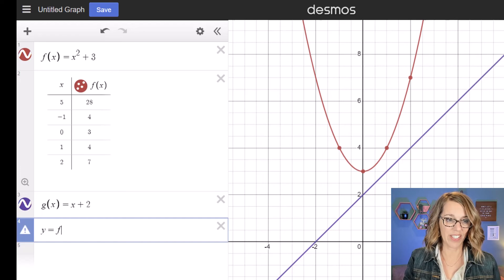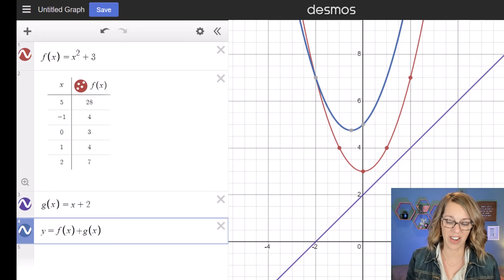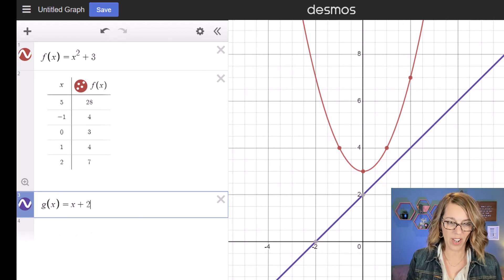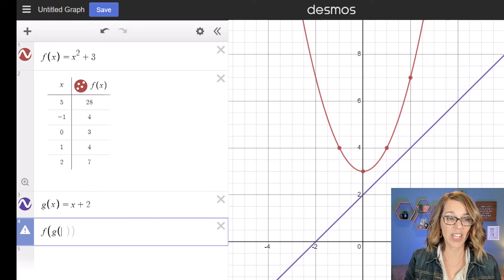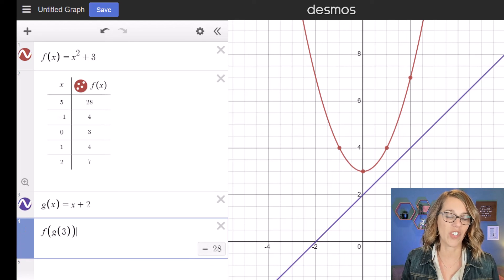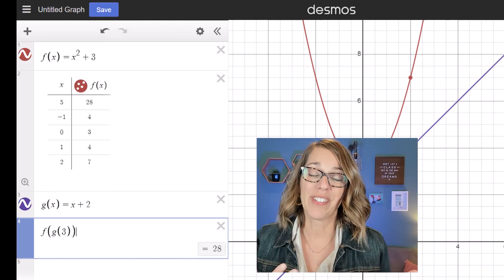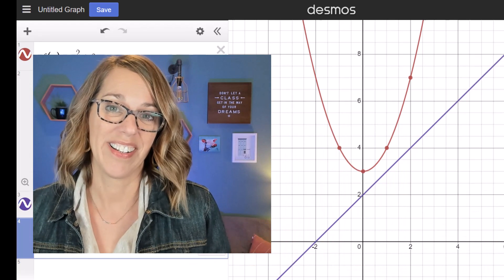We can say y equals f of x plus g of x, and we've got our brand new transformed graph there. Or we can even do a composition. Let me grab a brand new cell here and I'm going to do f composed with g of, let's say, f composed with g of 3. Desmos does this and so much more. Thank you.